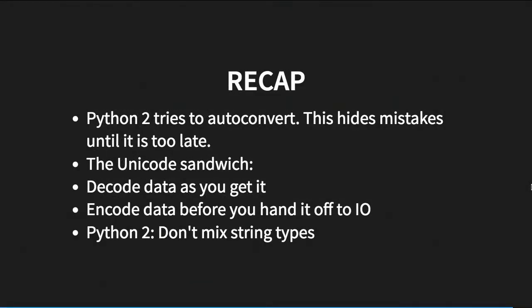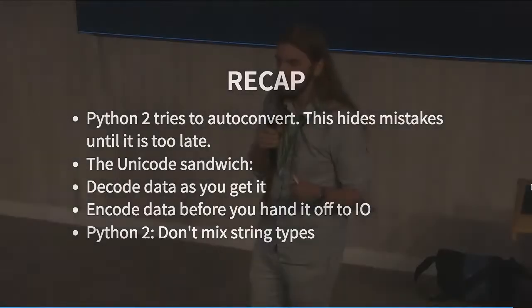Recap: Python 2 tries to auto-convert, which hides mistakes until it blows up when you get the wrong kind of data — not the best kind of mistake to have. The Unicode sandwich: follow these rules — decode the data as you receive it, encode it as you send it out. In Python 2, don't mix str and unicode types. It's a lot easier in Python 3 because it doesn't let you do this auto-conversion confusion. And that's it — I hope it gives you a basis to understand things better.